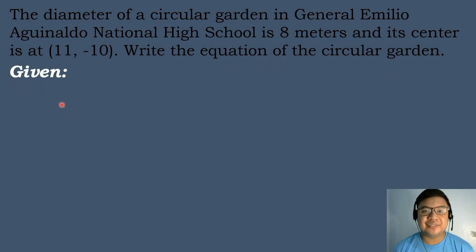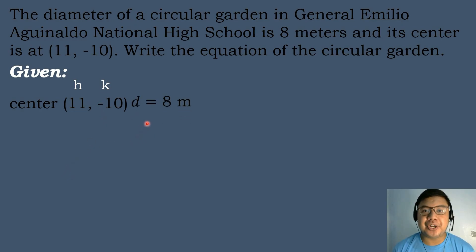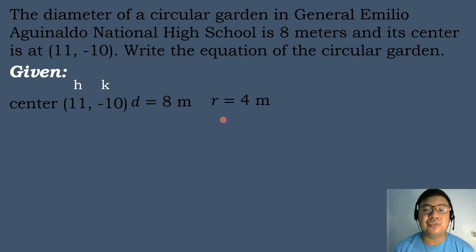Let's have our next example. The center of the circular garden is at coordinates (11, negative 10), where h equals 11 and k equals negative 10. The diameter is equal to 8 meters. We need the radius, so we divide the diameter by 2: 8 divided by 2 equals 4. The radius of the circle is 4 meters.